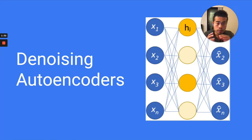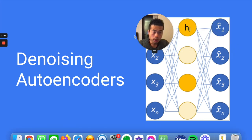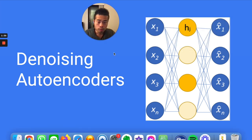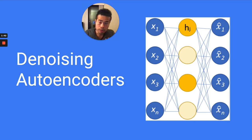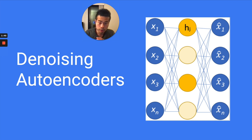Before we dive into BART, we probably need to understand what a denoising autoencoder is, because BART is kind of a denoising autoencoder. So what does denoising autoencoder mean?